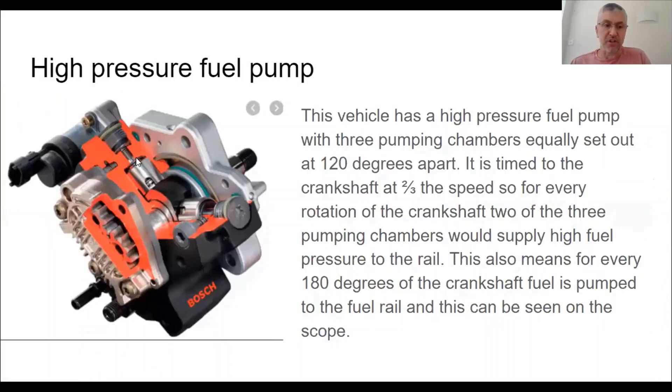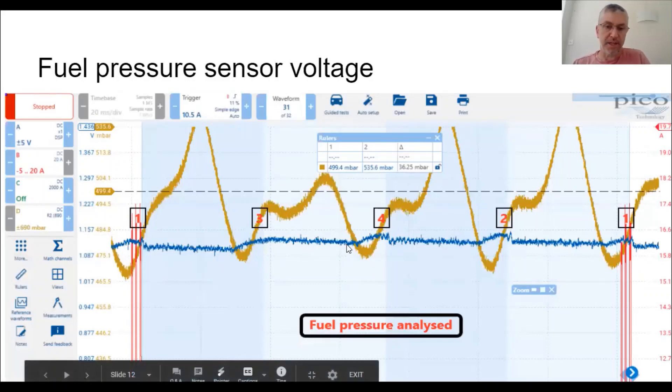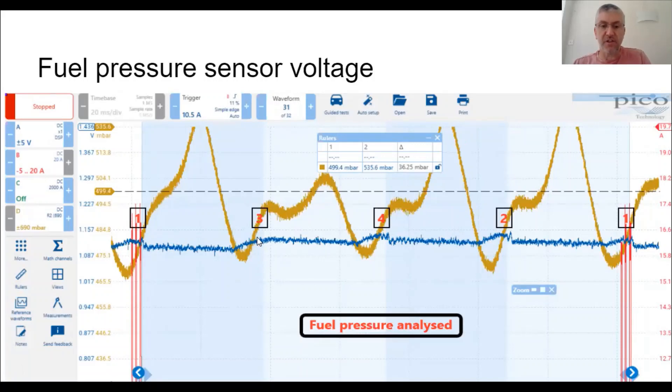My blue channel here is my fuel pressure voltage at the rail. It looks nice and even, nice and stable. But if we examine this closer, we can get a lot more detail. So first I want to discuss what my injection pump on this vehicle is. It's a three chamber pump and it's timed. They're separated 120 degrees. They're spaced out 120 degrees and it runs at two thirds of speed of the crankshaft. So for every revolution of the crankshaft, two of these chambers will put pressure into the rail. And this can be seen on the scope. So as you can see, when we zoomed in, we can see a nice increase in pressure just before each injector event happens.